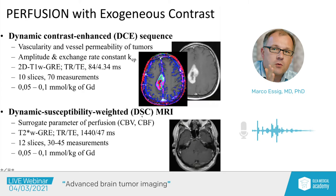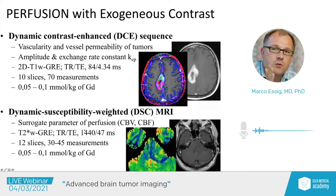In dynamic susceptibility-weighted MRI (DSC), the most commonly used technique, we use surrogate parameters CBV and CBF. We acquire T2-star-weighted EPI scans at high frequency and inject contrast media as a half-dose or single-dose bolus. In a homogeneous non-enhancing tumor, applying the perfusion CBV information reveals a hotspot in the center of the tumor with higher blood volume than the rest — an area that either has malignant transformation or very specific blood supply, making it the ideal biopsy target as the likely highest-grade region of the tumor.